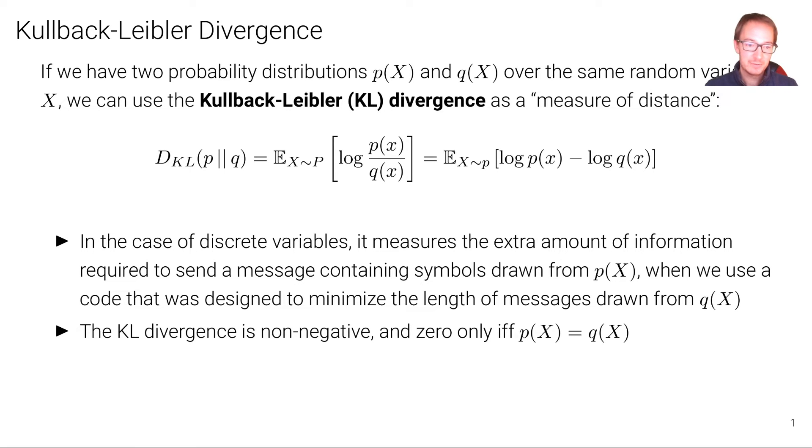A property of the KL divergence is that it's non-negative and it's zero only if p(x) equals q(x). However, the KL divergence is not a true distance measure, as we'll see, which means it's not symmetric.